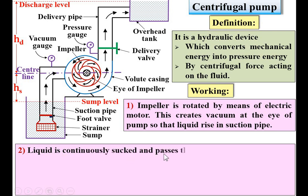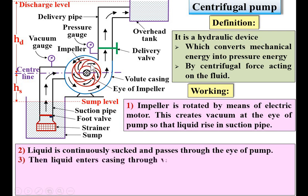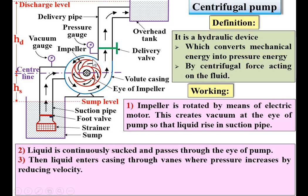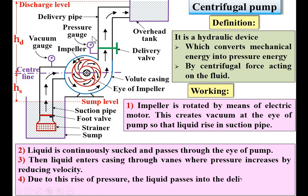Liquid is continuously sucked and passes through the eye of the pump. Then liquid enters the casing through the blade passage where pressure increases by reducing the velocity. The area is also going to increase along the vane passages, so the pressure is increased. Similarly, in the casing, area is also gradually increasing, so once again the pressure is increased. Due to that pressure, the fluid rises in the delivery pipe and is lifted to the required height.